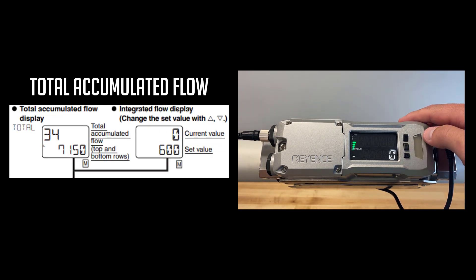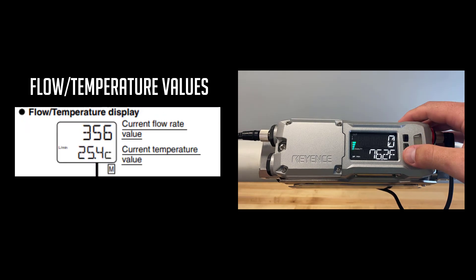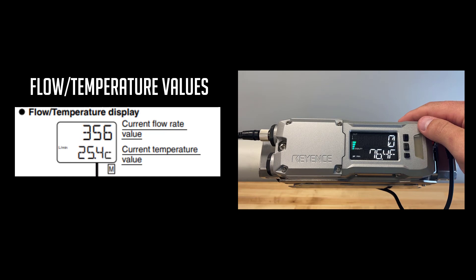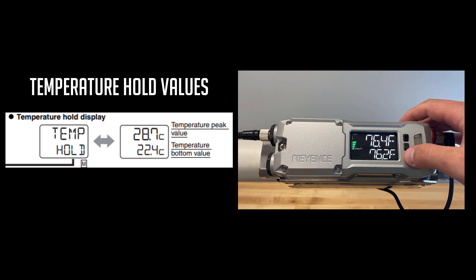Next is total, where the bottom number is your threshold, and the top number is the total amount of liquid flown past the unit. The next display is flow temperature display, where the bottom number is the temperature of the liquid in the pipe, and the top number is your current flow rate. Finally, we can see our temperature hold display, where the top number is your peak or highest temperature at a given time, and the bottom number is your lowest temperature at a given time.